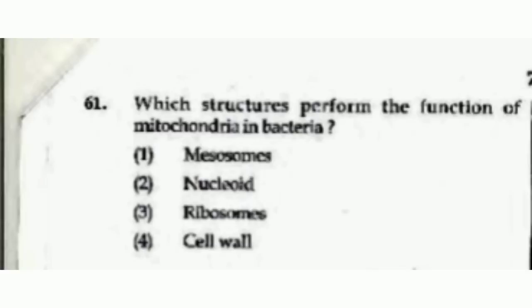Which structure performs the function of mitochondria in bacteria? Options are Mesosomes, nucleoid, ribosomes, or cell wall. The correct answer is option number 1, Mesosomes.